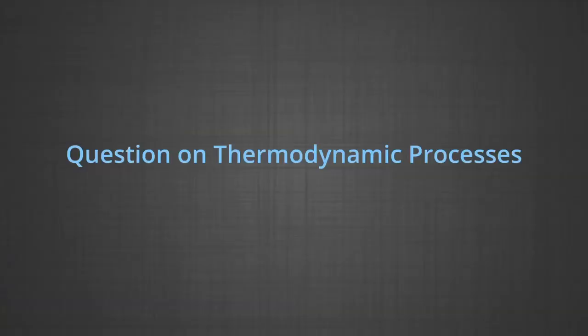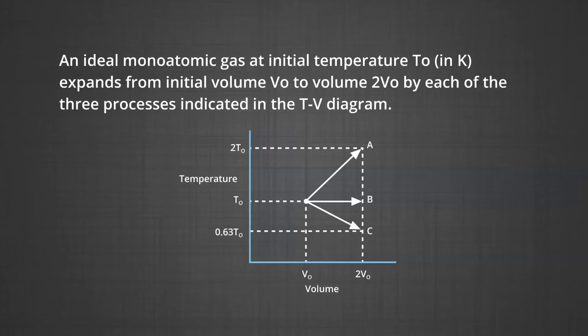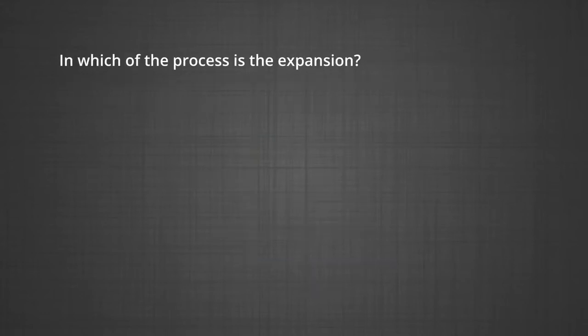The next question is based on thermodynamic processes. An ideal monoatomic gas at initial temperature T₀ (in Kelvin) expands from initial volume V₀ to volume 2V₀ by each of three processes indicated in the temperature-volume (TV) diagram shown on the screen. In which of the processes is the expansion isothermal, isobaric, or adiabatic?